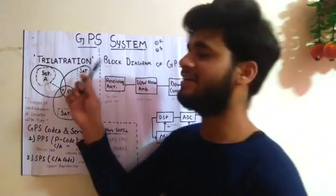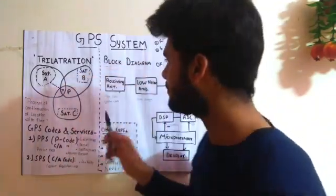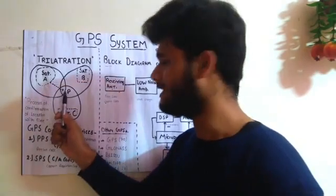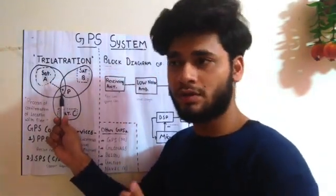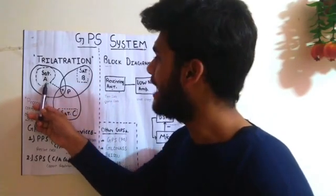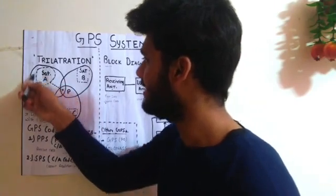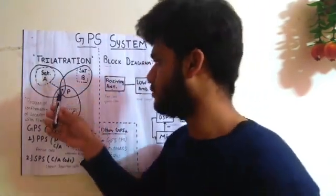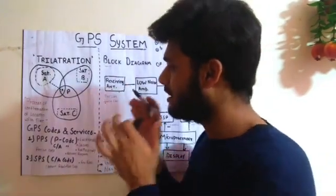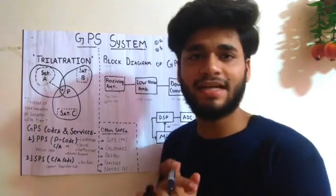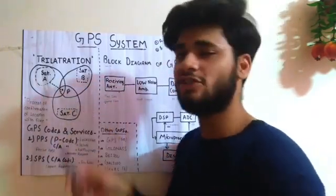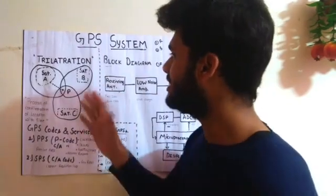Now we can see the process of trilateration, which is the fundamental process for the GPS system. If there is a GPS satellite A and our GPS receiver is at point P, when the receiver gains a signal from satellite A it confirms the user is within the radius of that satellite. Its position gets more confirmed when it also gains a signal from satellite B. For a confirmed location, we need a minimum of three satellites. Here point P is getting signals from A, B, and C, which confirms its location — this process is known as trilateration.